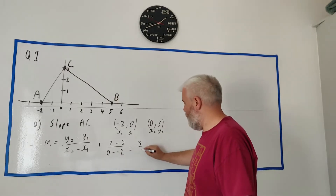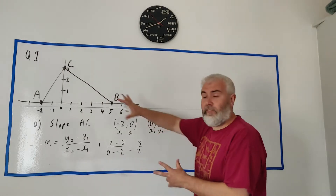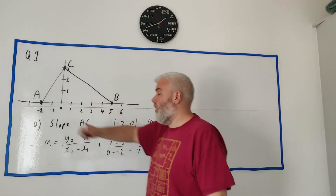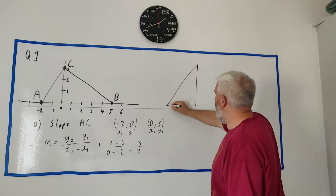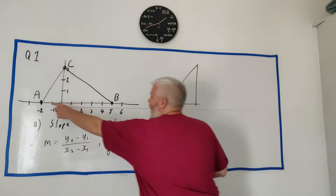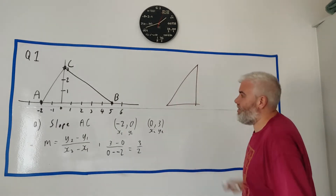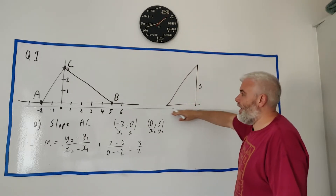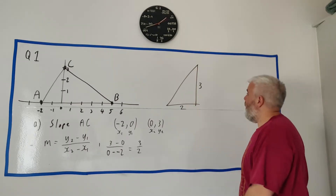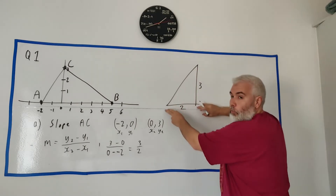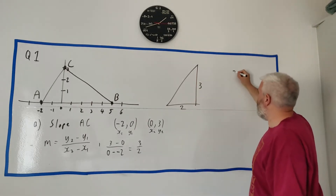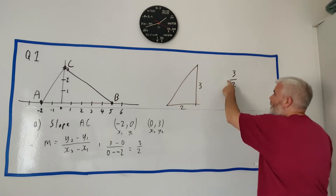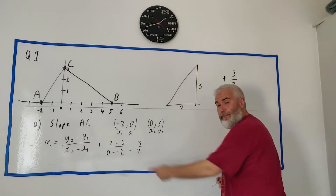You didn't have to do any of that — you could have done this question much quicker. Use triangles if you can to get slopes. Here's the triangle for AC using the straight baseline. The height of this triangle is 3 and the length is 2, so rise over run gives slope = 3/2. It's going up, so it's positive. Same answer, much quicker.